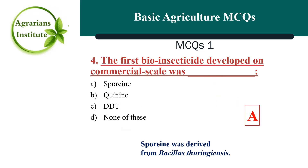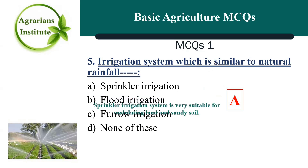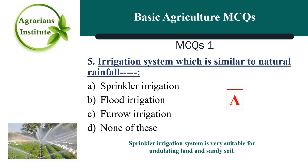Next MCQ: The irrigation system which is similar to natural rainfall — the correct answer is A, Sprinkler irrigation. Sprinkler irrigation system is very suitable for undulating land and sandy soil.